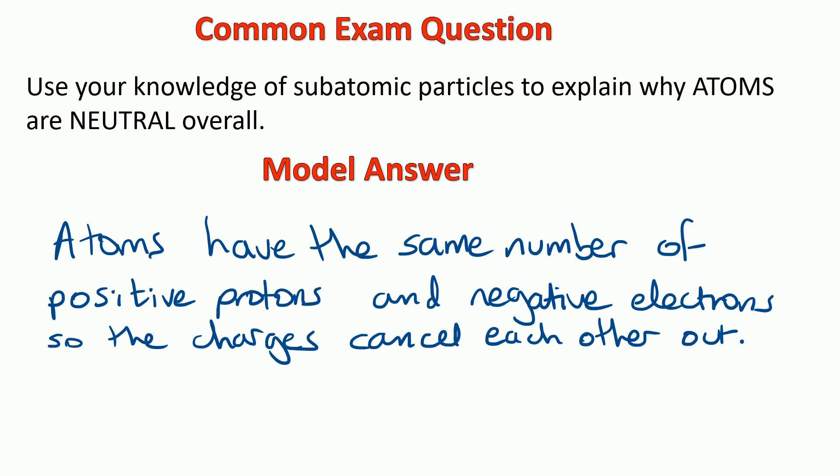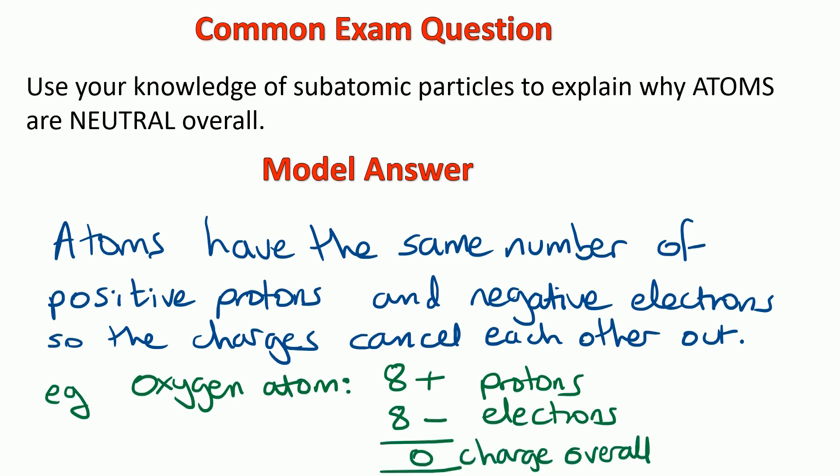I'll show you an example to show you what I mean by that answer. For example, if you think about oxygen that we worked out has got 8 protons, 8 neutrons, and 8 electrons - well, the 8 protons have an 8+ charge altogether. The 8 electrons come to 8-, and 8+ and 8- cancel each other out. So overall, the atom's got no charge.